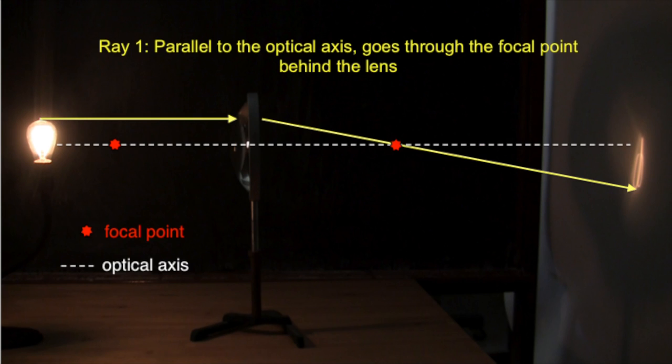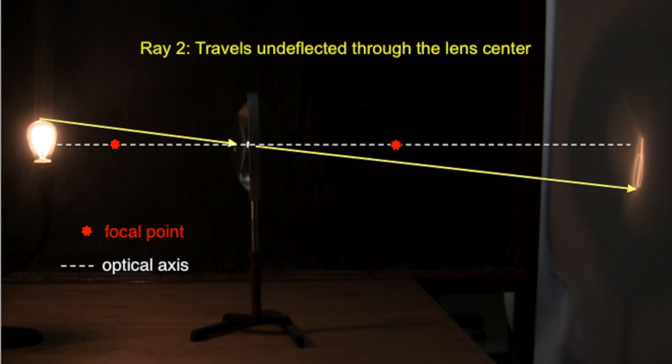We draw the first ray parallel to the optical axis. We can then extend this ray through the focal point. The second ray travels undeflected through the lens center. This is because at the center of the lens, the two sides are parallel.